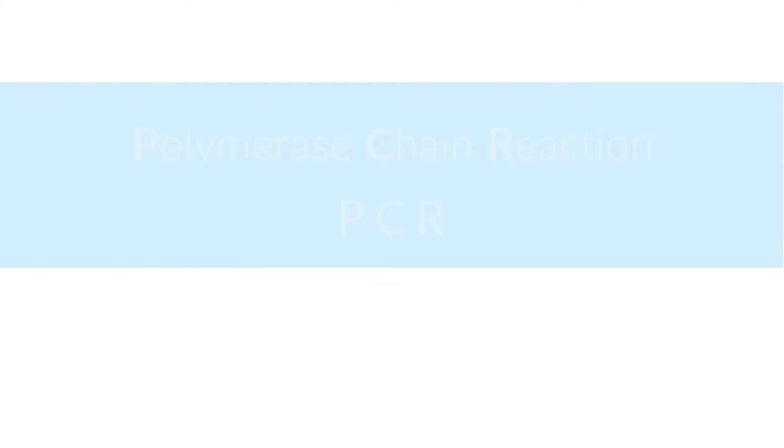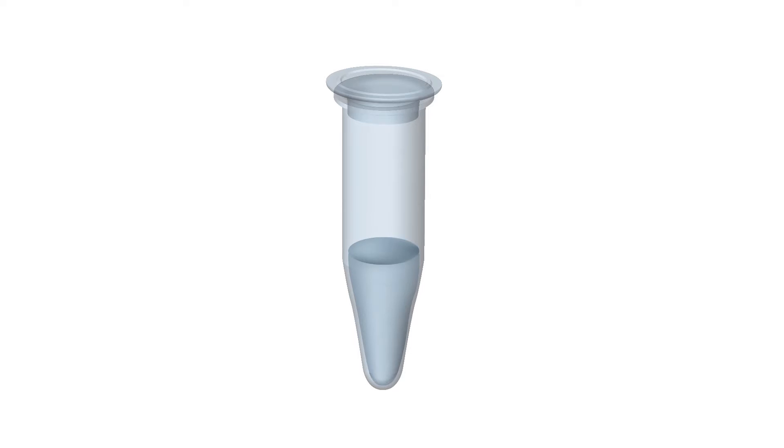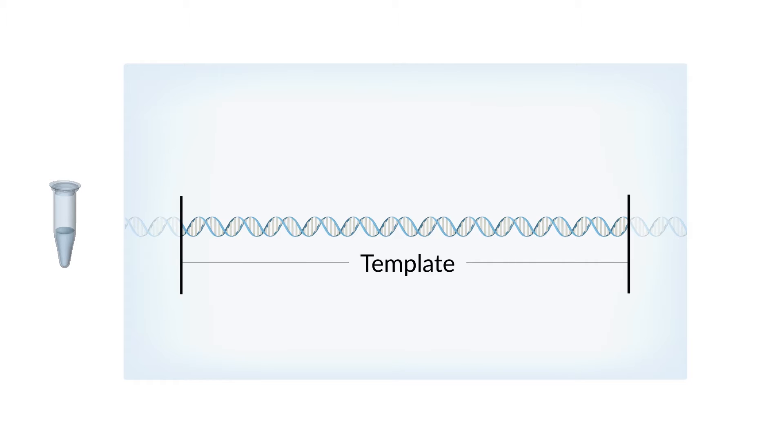PCR is based on the mechanisms of DNA replication, though it's performed in vitro. The underlying principle is quite simple. First, the double-stranded DNA, which serves as the template in the reaction, is separated by heat.